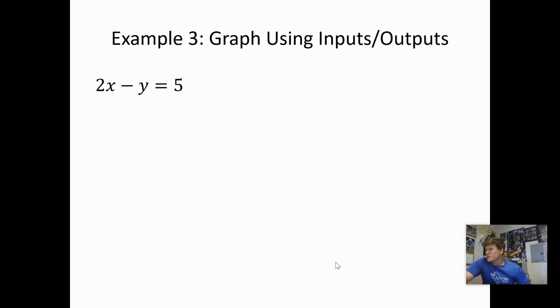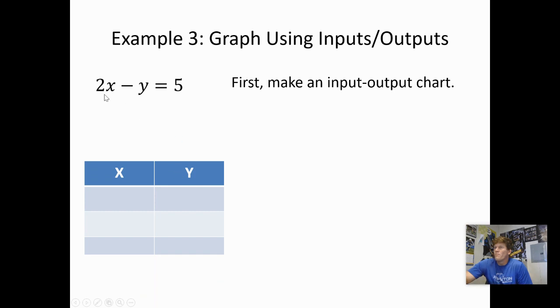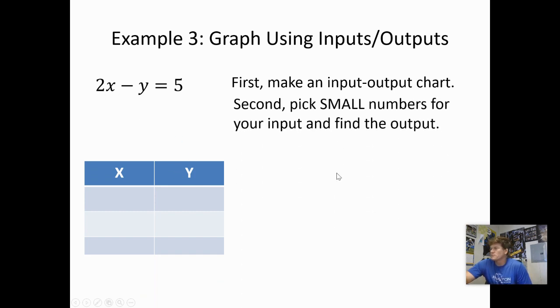Going to example 3. Now you're given equations. And it could be a lot of different looking equations. What I want you to do is make that input-output table. Make that input-output chart. I've got my X's and Y's. And I'm going to pick small numbers. So I don't have to do too much brain work. Small numbers I pick is 0. So I plug that 0 in. And then I solve for Y. 2 times 0 makes 0. So I'm left with negative Y equals 5. I don't want negative Y. So I multiply it by negative, which multiplies the other side by negative. Gives me negative 5 for my output.